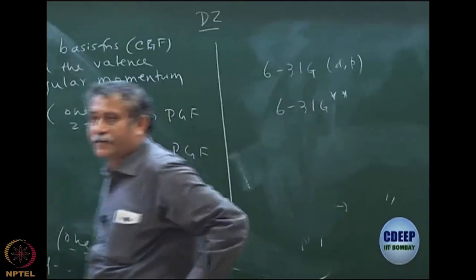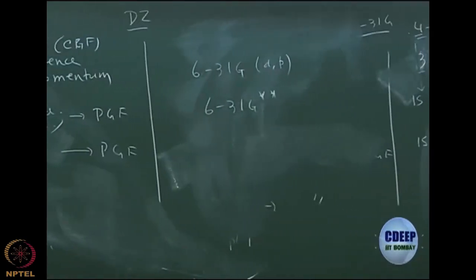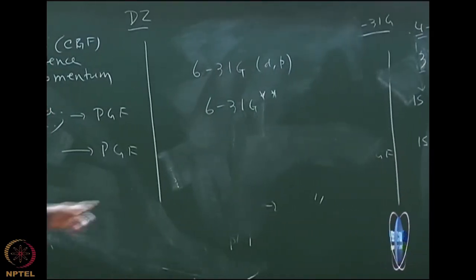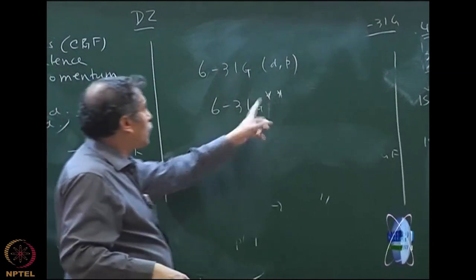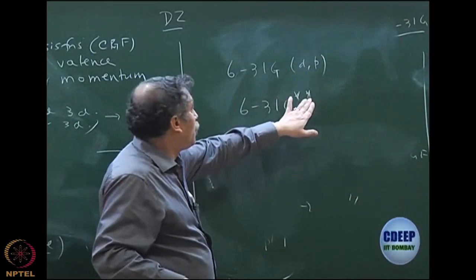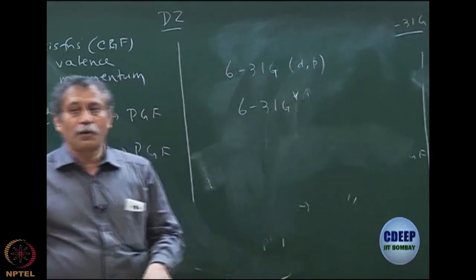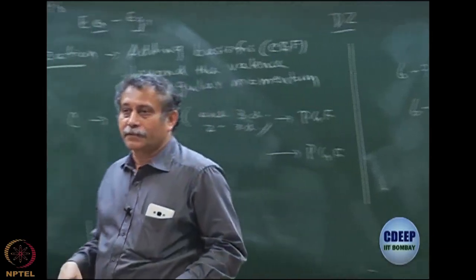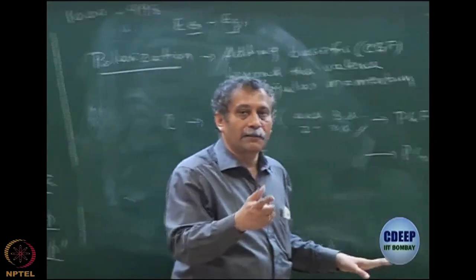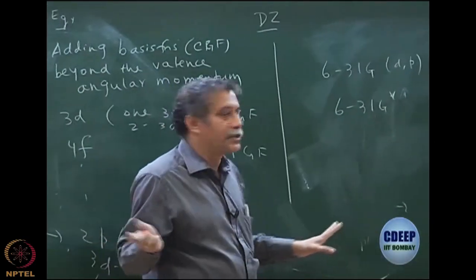If I have star-star (**), it means polarization on carbon and polarization on hydrogen — both. If I have only one star (*), it means polarization only on carbon or the first-row atom, not on hydrogen.